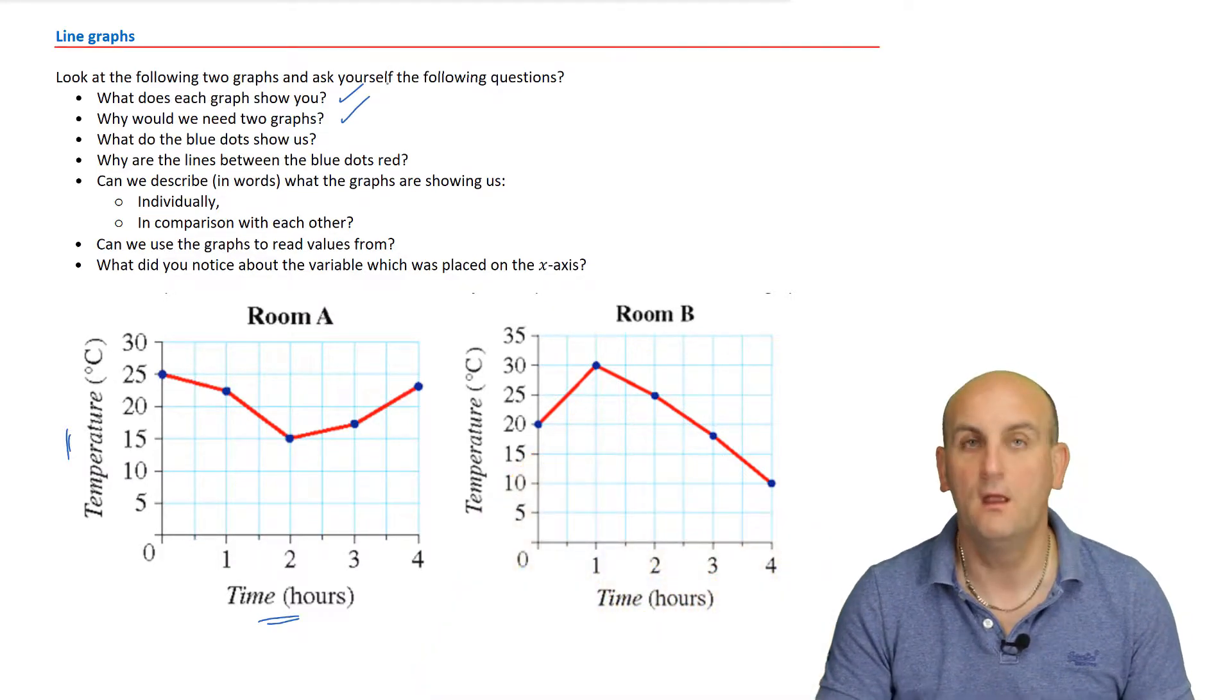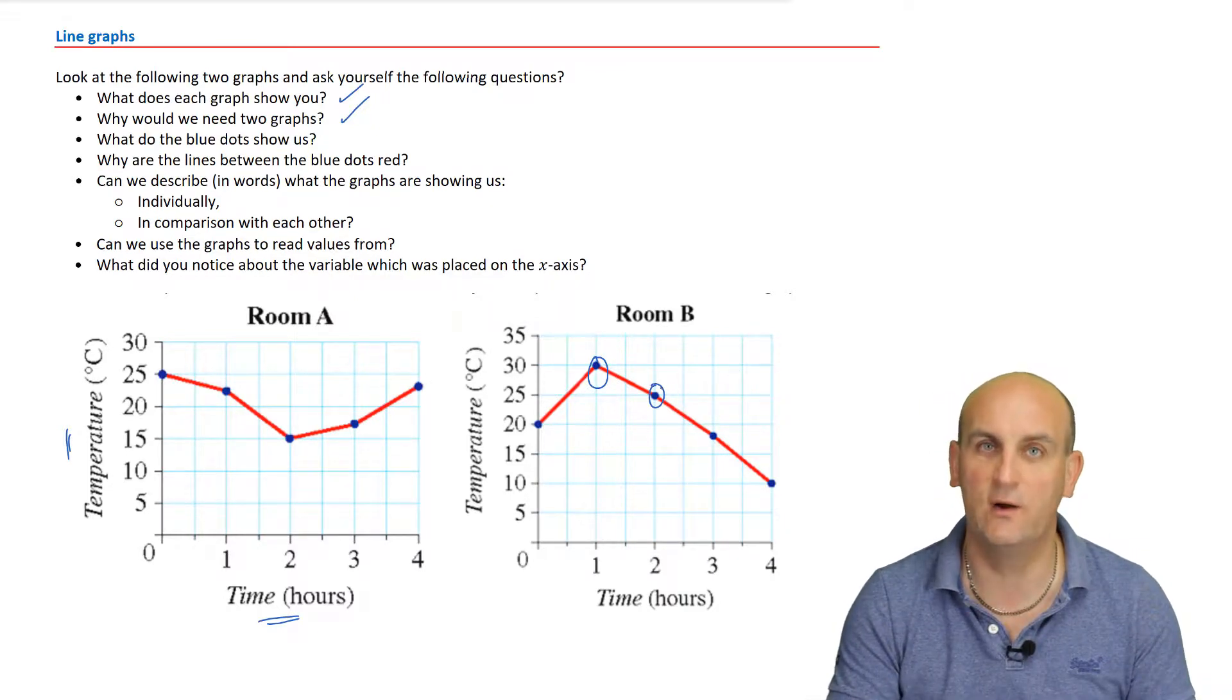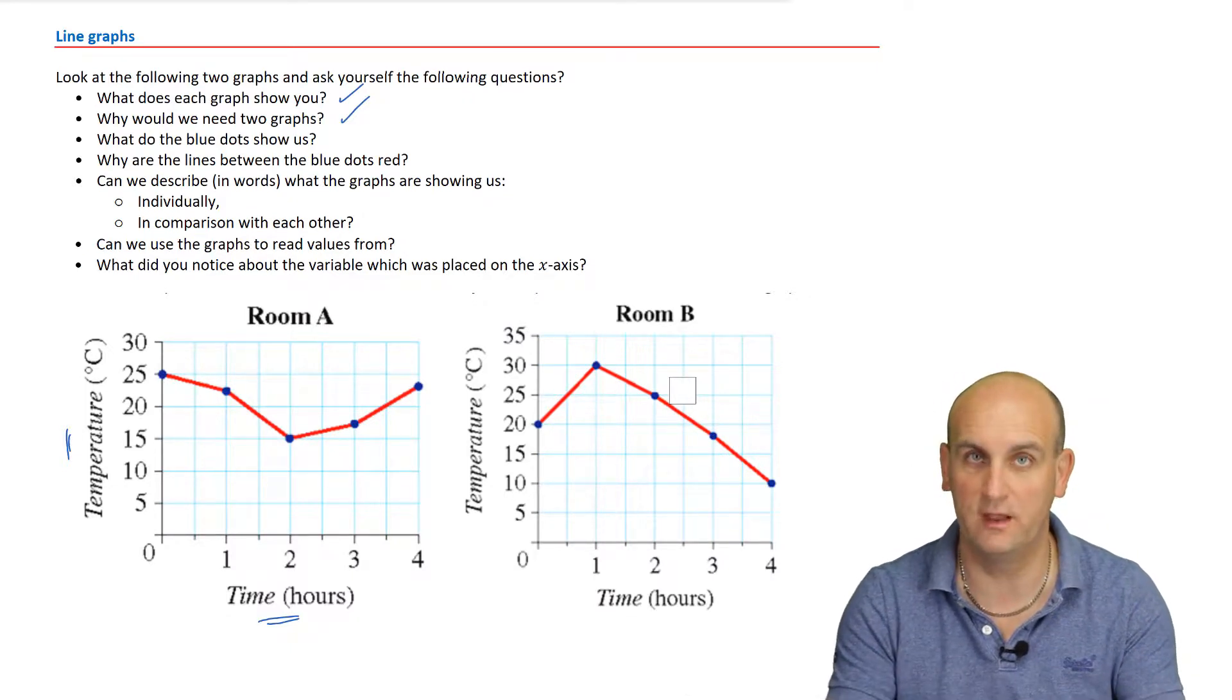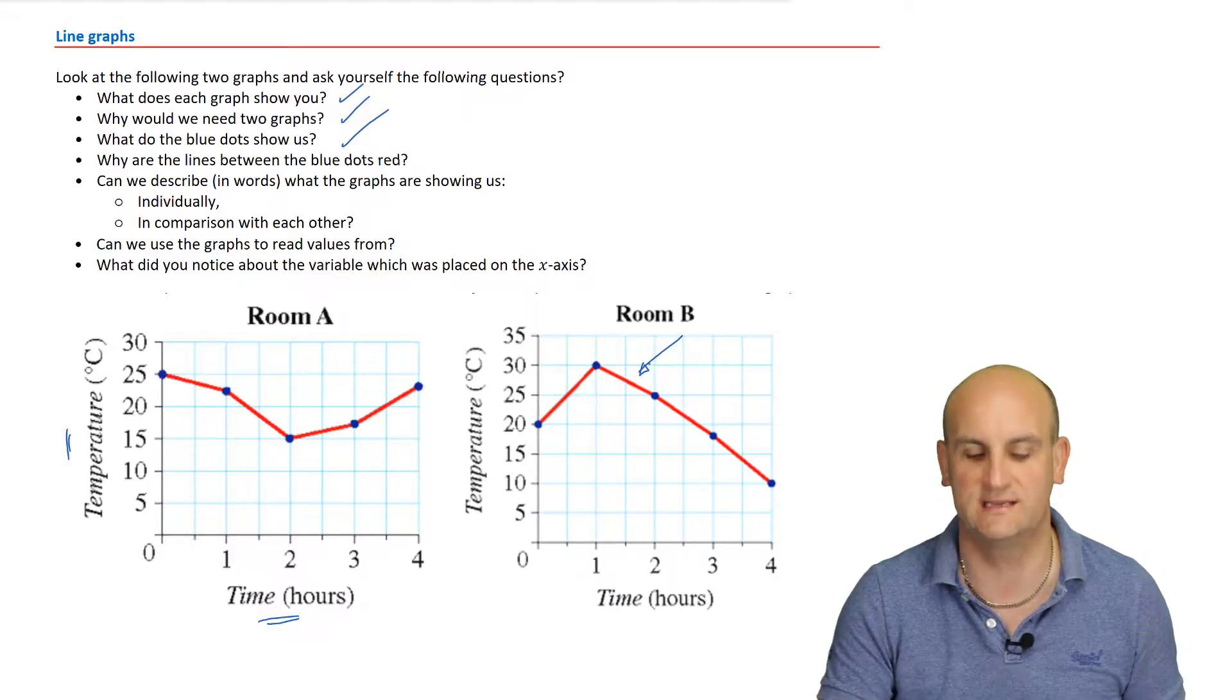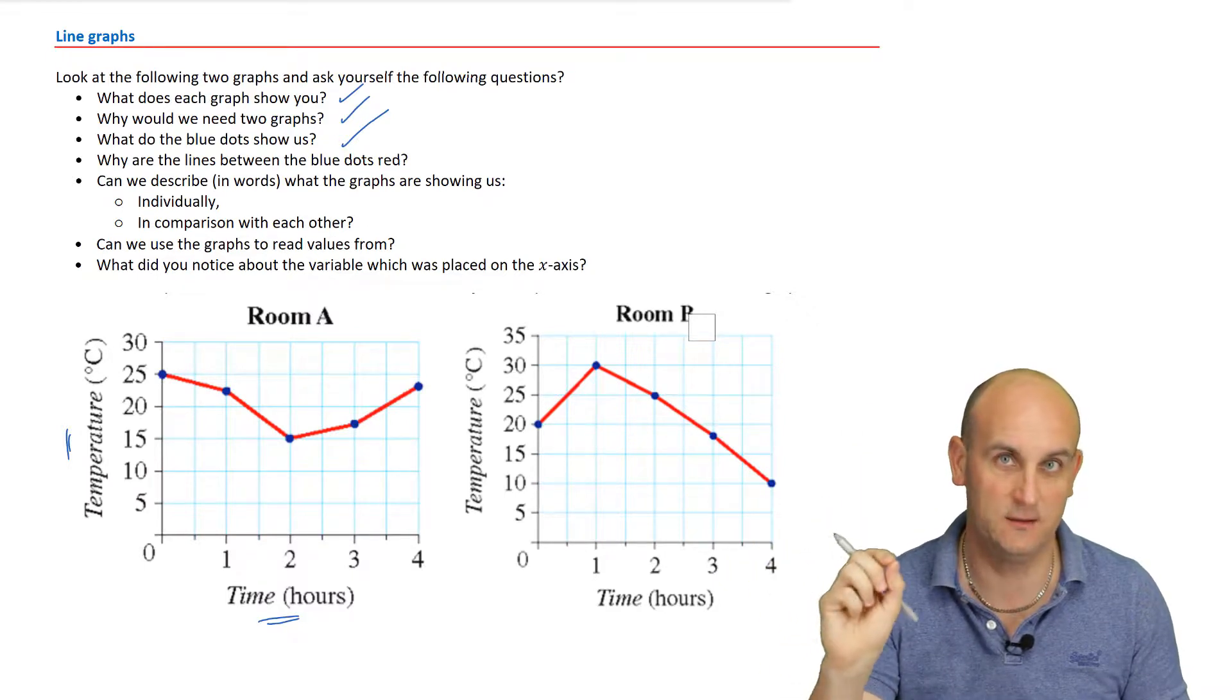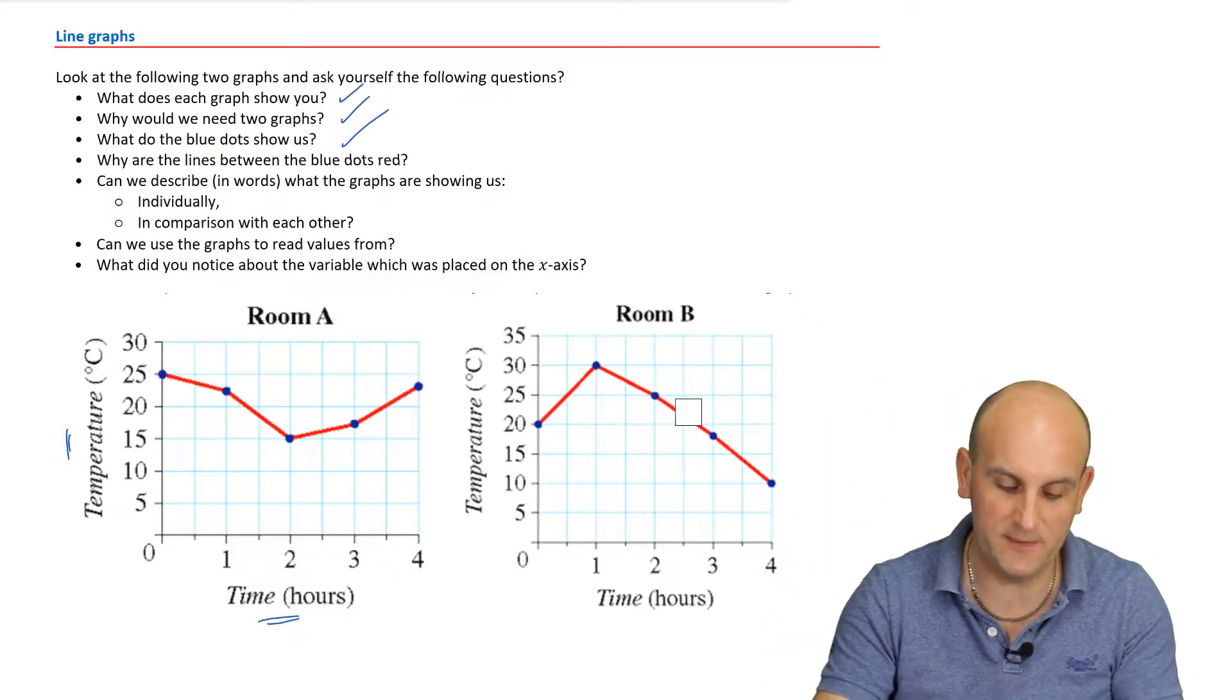Why would we need two graphs? Well, we want to compare them. Sometimes it's interesting to know what's happening in different rooms. Imagine you were doing an experiment where you needed heat in one room and cold in another. We'd use two graphs to help us compare. The big one here is what are those two, the blue dots here show us? Well, when I've walked into that room every hour or on the hour, I've actually physically taken my thermometer, or I've taken some sort of temperature scale and I've read the specific value. So each of these blue dots are where I've taken an actual measurement. That's really important. I've actually taken a measurement.